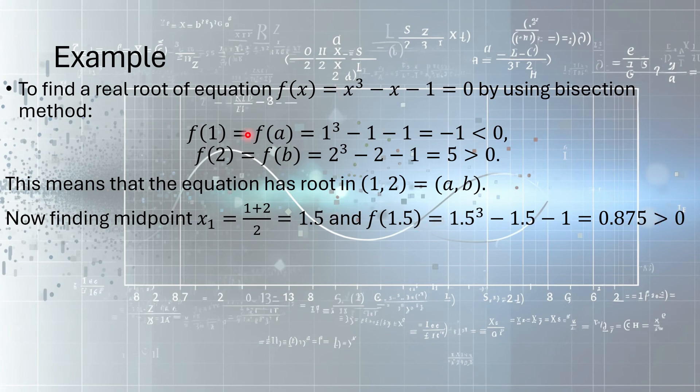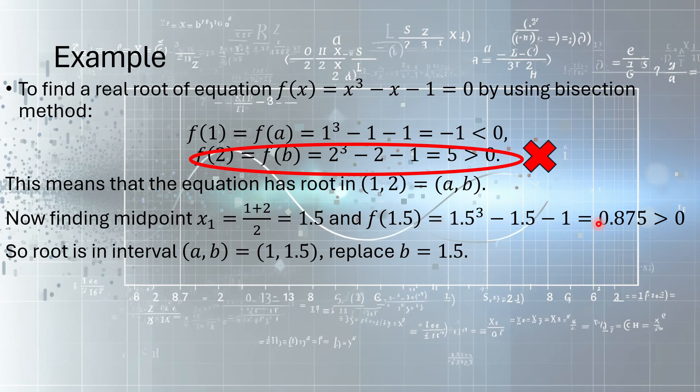If it is positive, f(1) is negative. It means we'll be taking this interval next time and neglect this one. So the root of this equation will be in interval 1 and 1.5. We have to replace b with this xr. In this case, it's x₁. So the next interval will be 1 to 1.5.